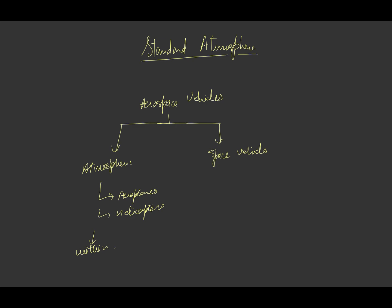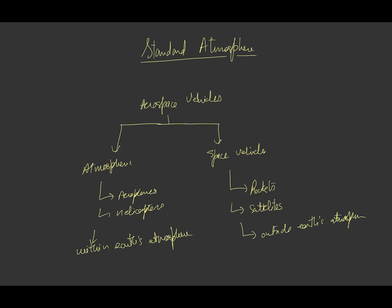They fly within Earth's atmosphere. Number two is space vehicles — these are rockets and satellites, and they mostly fly outside Earth's atmosphere. Although space vehicles fly mostly outside Earth's atmosphere, during their launching or when they come back, they also have to face Earth's atmosphere.